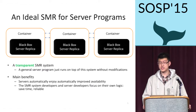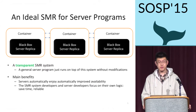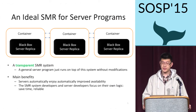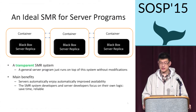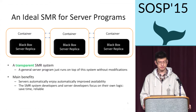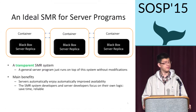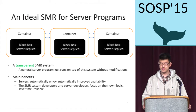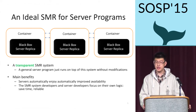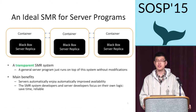That's exactly what our system does. Here I'd like to propose our system, Crane, which provides a transparent state machine replication service. People plug in their server as a black box and get replication automatically. Crane will run as a container and handles all the details of replication so that developers can focus on their own services. As a transparent SMR system, Crane achieves availability and transparency at the same time.